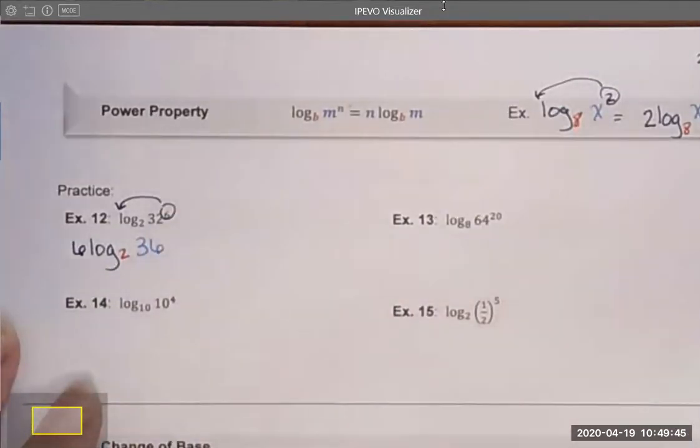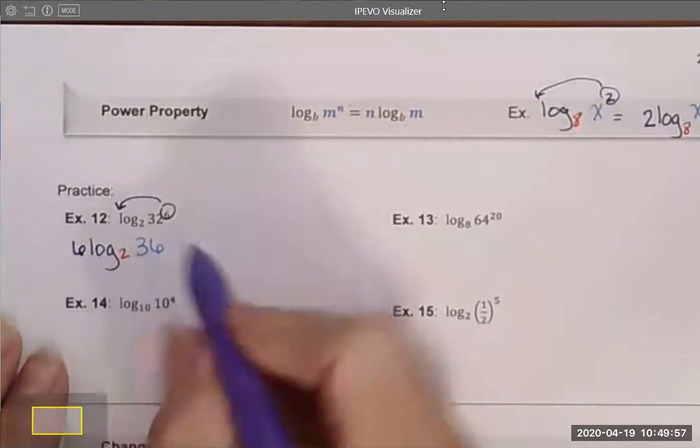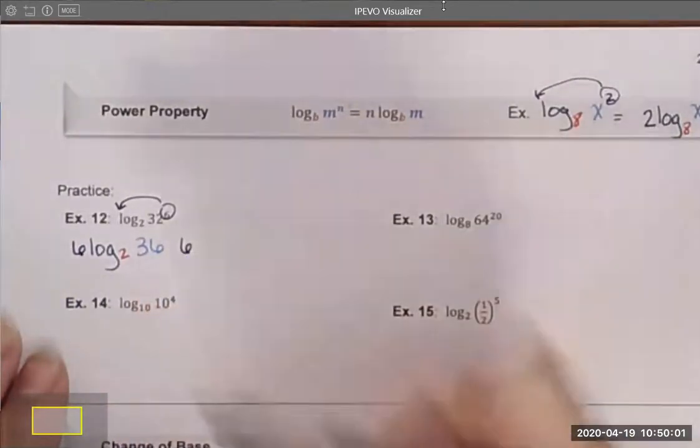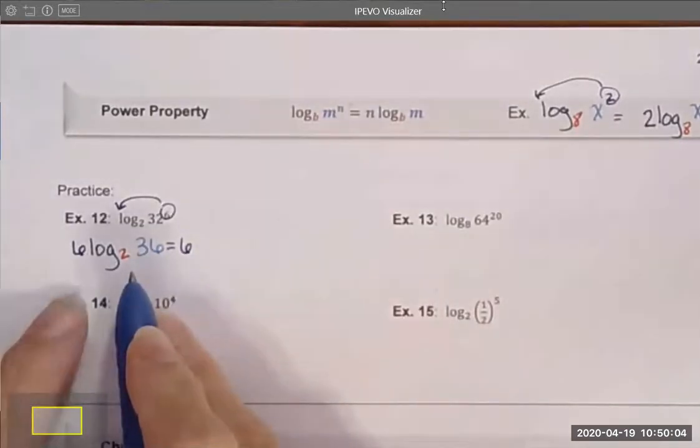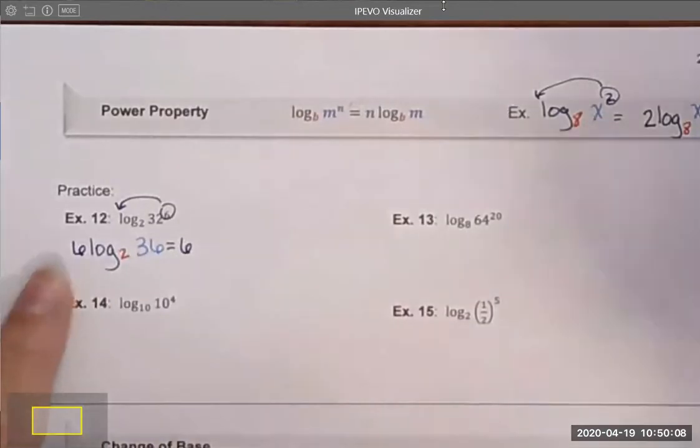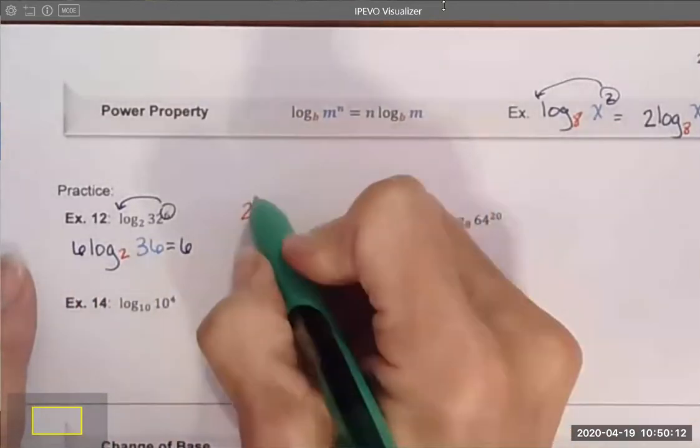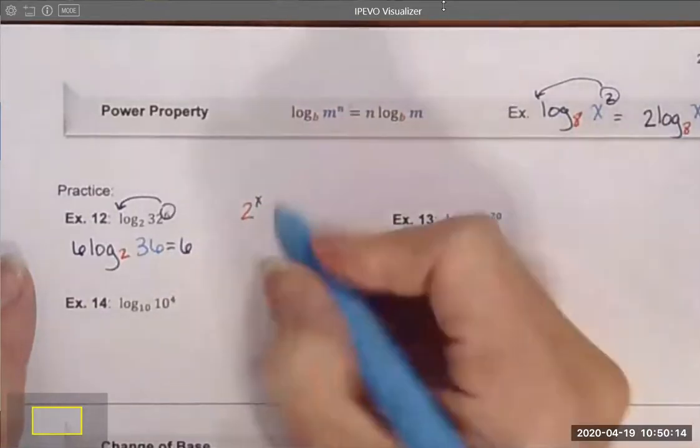Sometimes that's as far as I'll be able to go. At other times, I can evaluate this and come up with the exponent that 2 could be raised to to equal 36. I'm going to do that now. I keep the 6 because it's being multiplied. So if I evaluate, I say that this is equal to 6 times, and I ask myself what 2 to what power equals 36?